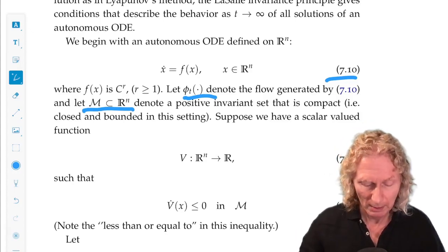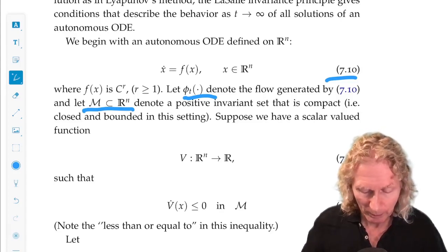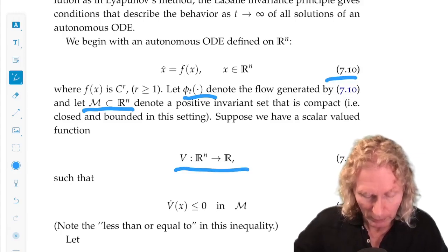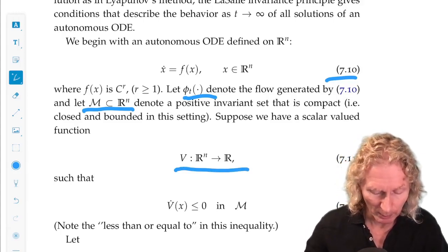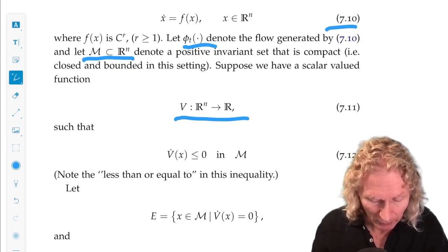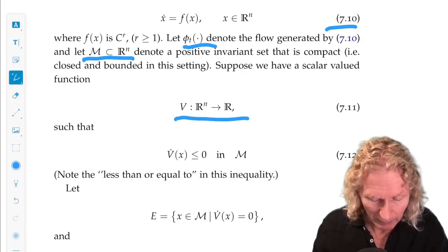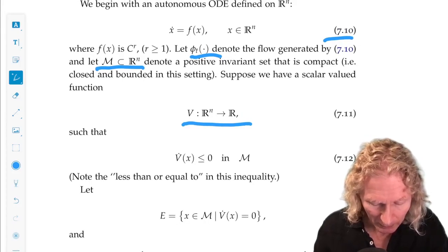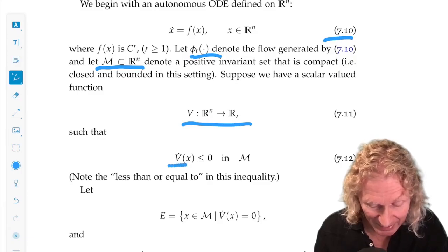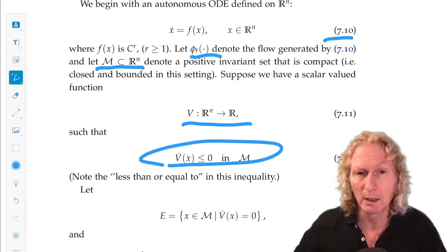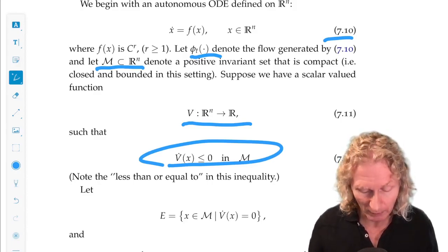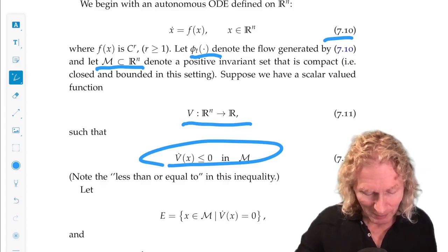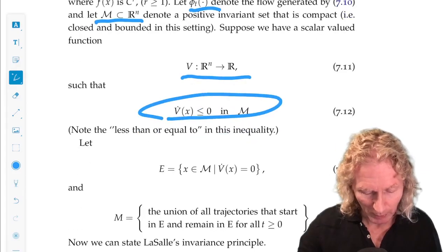How do we find it? Worry about that later. We have a scalar valued function that we use the same notation that we use for Lyapunov function, V: R^n → R, but it has the property that its time derivative along trajectories is less than or equal, note the equal, to zero in M.